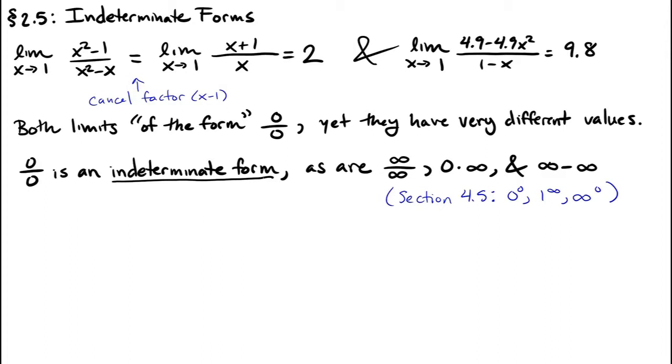The indeterminate form 0 over 0 is special. Recall section 2.1. We had a curve y equals f of x, and then we looked at the line connecting the points x,f(x) and a,f(a). We called this a secant line of the curve, and we also said that when f is representing position, the slope of a secant line is representing an average velocity. As we moved x closer and closer to a, we were getting something called a tangent line, and the slope of the tangent line was representing an instantaneous velocity.